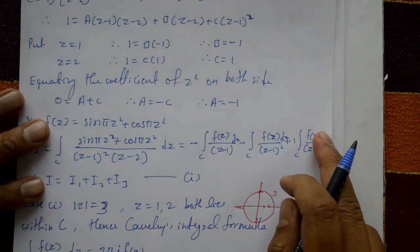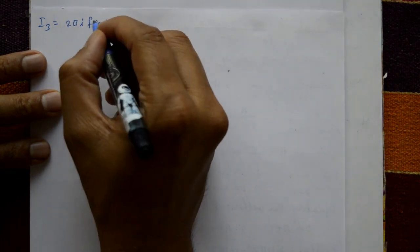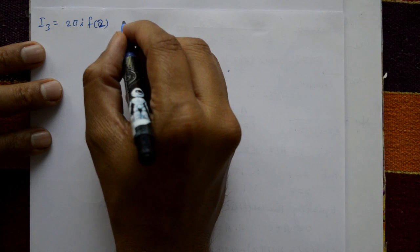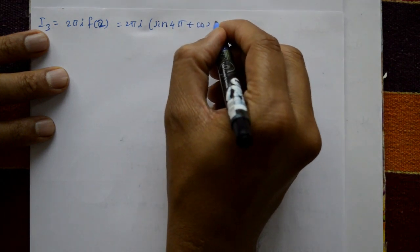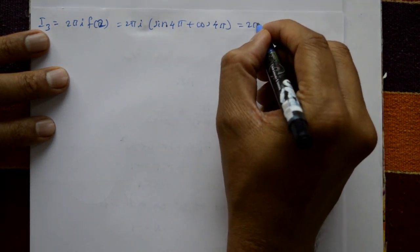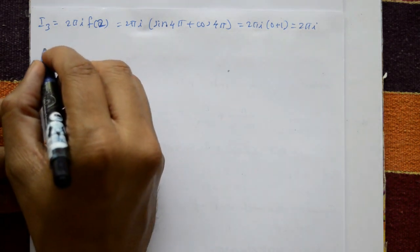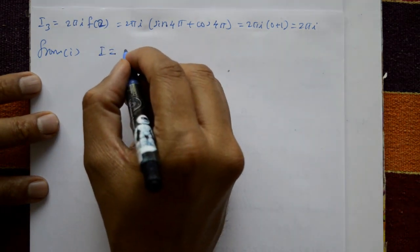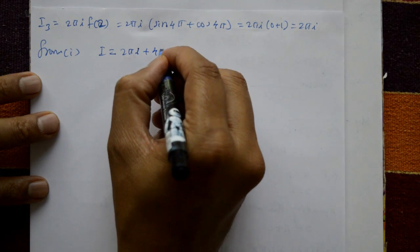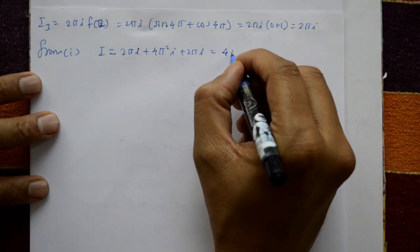For I3, using Cauchy's integral formula with a = 2: I3 = 2πi f(2) = 2πi(sin 4π + cos 4π) = 2πi(0 + 1) = 2πi. Therefore for Case 1: I = I1 + I2 + I3 = 2πi + 4π²i + 2πi = 4πi + 4π²i.